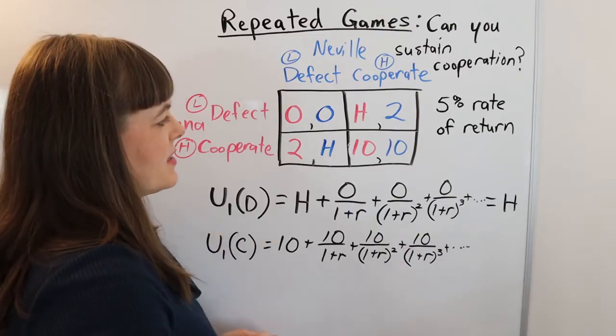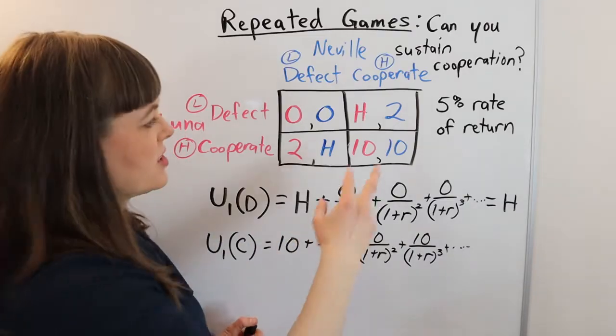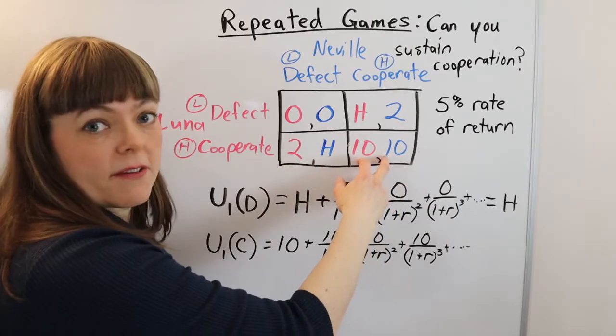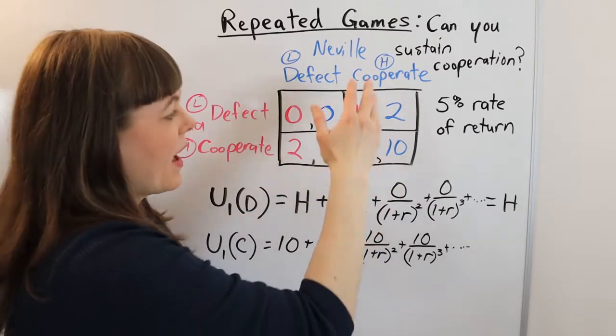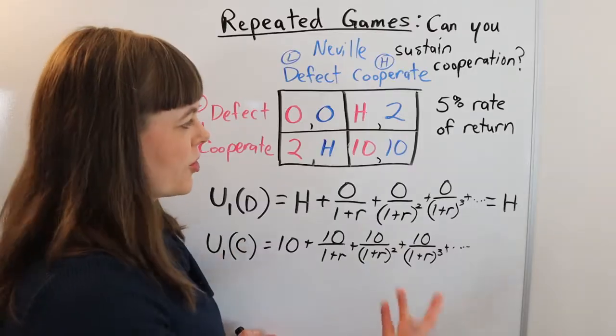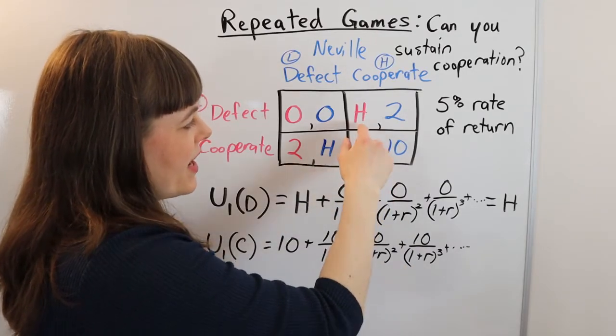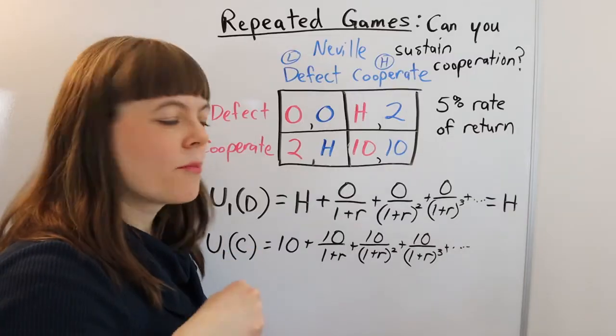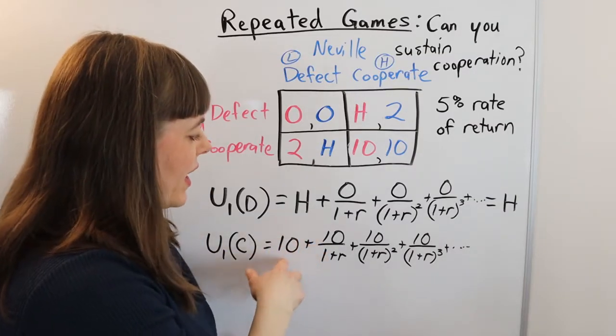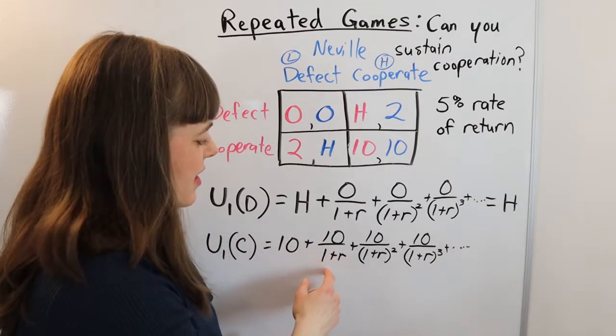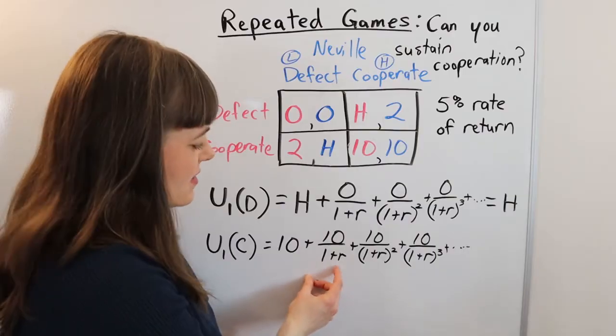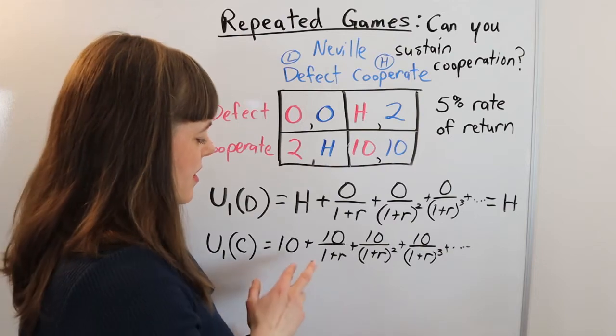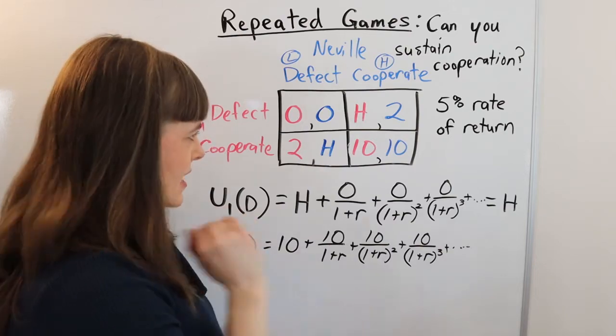Now, if she cooperates this round, and basically that means she's cooperating because she wants to get this cooperative equilibrium payout every round from now into the future. And the reason for that is if you're going to defect, you want to defect right now, because of course, waiting another period to defect, you're going to get less since that's discounted at some sort of rate of return.